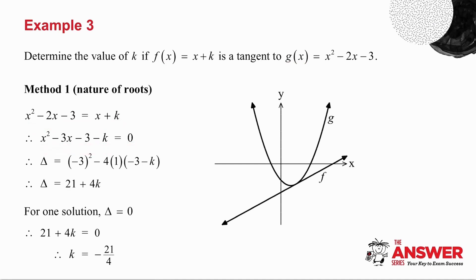I'm now going to work out delta. My a value is the coefficient of the x² term. B is the coefficient of the x term, and c is every term without an x. So I substitute those values into delta and I get that delta is equal to 21 + 4k.